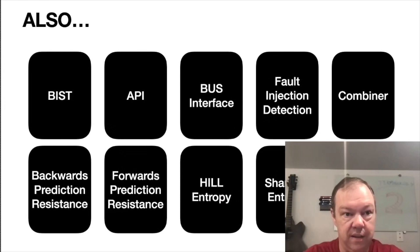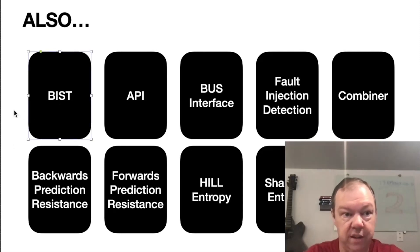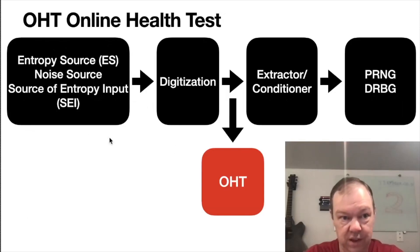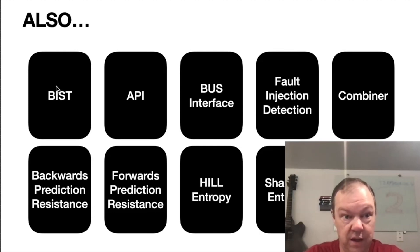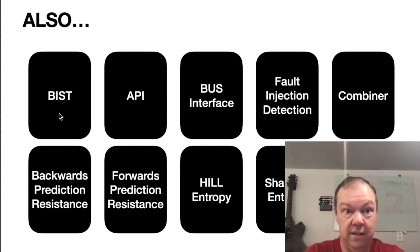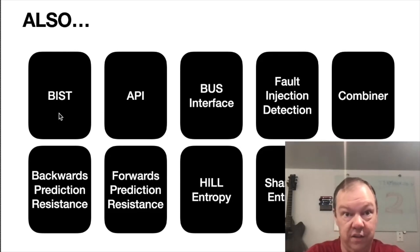BIST stands for built-in self-test. The online health test tests the entropy source, while BIST tends to test the rest of the system. In the Intel chips, BIST logic tests all the digital logic and then tests the entropy source, so everything is tested. While running, it continues to periodically test the logic to detect if somebody is trying to attack it. API — application programming interface — is how you serve up random numbers and provide control to configure the random number generator. That API might be a software interface or a bus interface; if you're hardware, you'd typically hook it up to a computer bus like PCI, or an on-chip bus such as an ARM host bus or ARM peripheral bus.